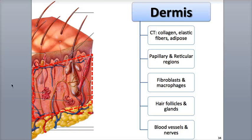Hello everybody, this is Rob Swatsky from the York campus of HACC, and in this podcast I'll be reviewing the area of the skin called the dermis. The dermis is the thicker, deeper area of the skin and is made of dense irregular connective tissue with abundant collagen and elastic fibers, which gives it great tensile strength, allowing it to stretch and recoil.